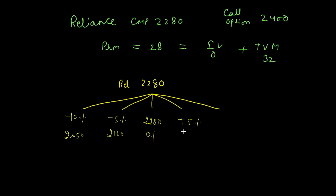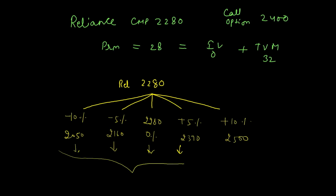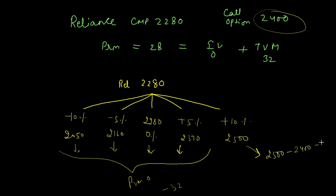Reliance can also increase slightly by 5% to around 2390, or it can move up by 10% to 2500. In the first four cases, since the stock price didn't cross the strike price of 2400, the premium becomes zero — you have a total loss of 32 rupees. You have a profit only when Reliance moves up significantly. If Reliance moves up 10% to 2500, your profit is 2500 minus 2400 minus 32, which equals 68 rupees. So as an option buyer, you are winning only one out of five cases — a probability of winning of just 20%, meaning option sellers win 80% of the time.